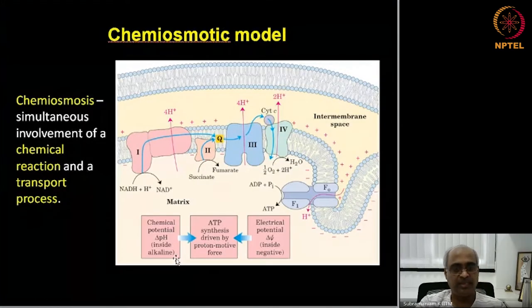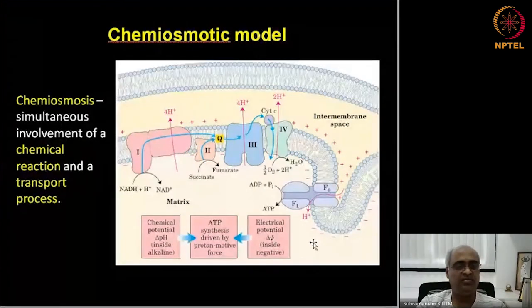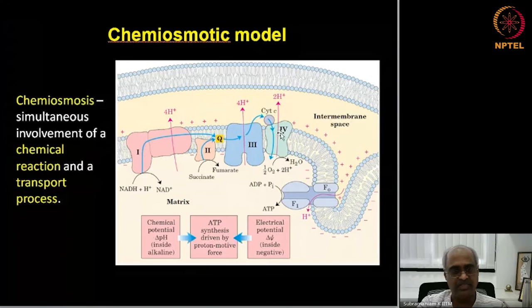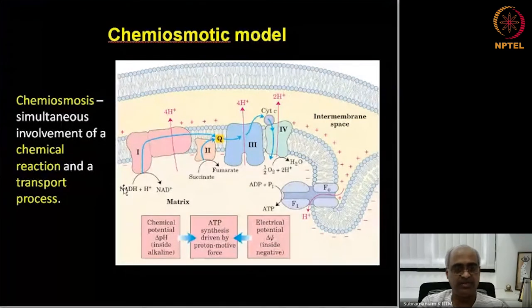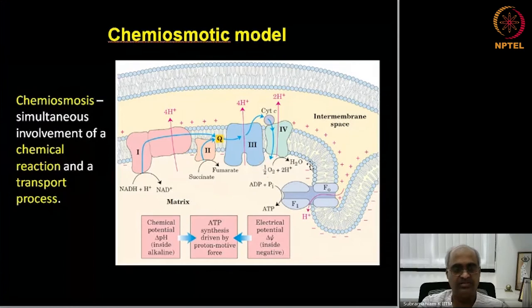This brings us back to chemiosmosis. This is the outer mitochondrial membrane and this is the inner mitochondrial membrane where all the electron transport complexes are present. Cytochrome C diffuses across and ubiquinone is within the membrane. As electrons flow to oxygen, producing water, protons are pumped across by these three complexes. The numbers correspond to a single molecule of NADH; for one molecular oxygen you start with 2 NADH and numbers double.